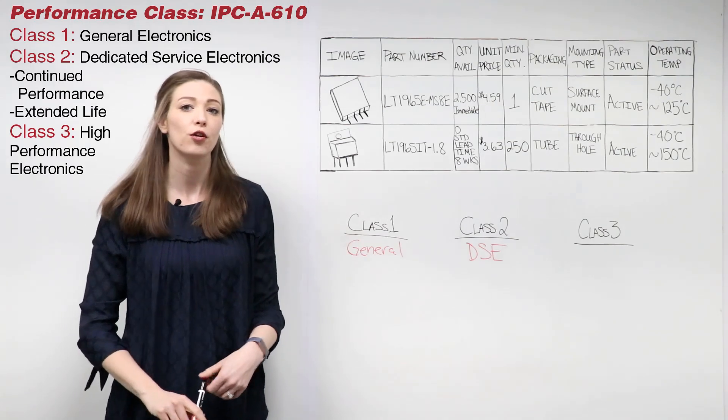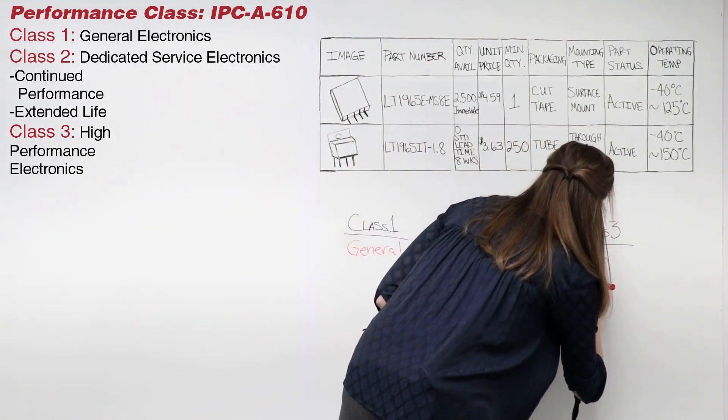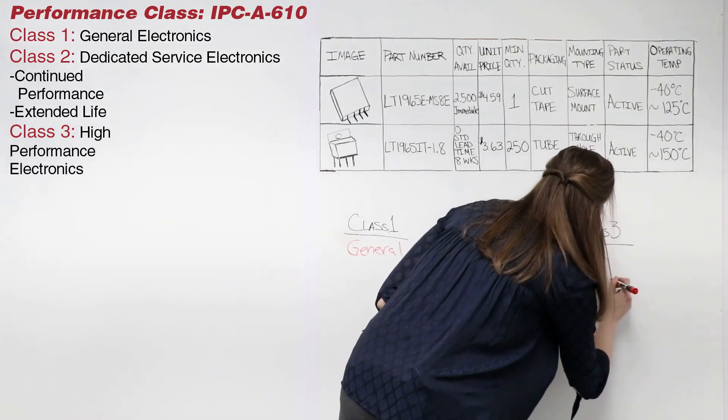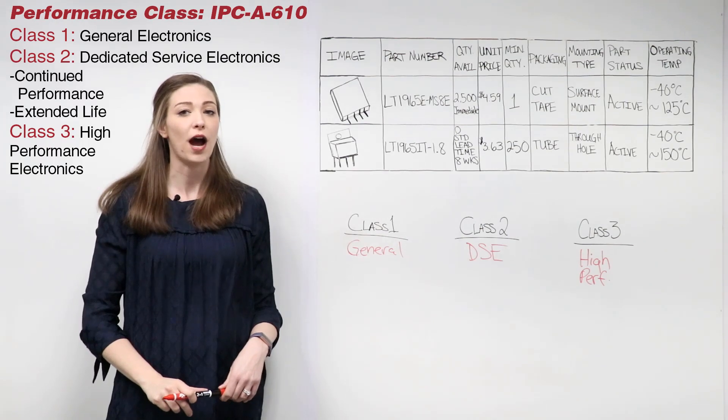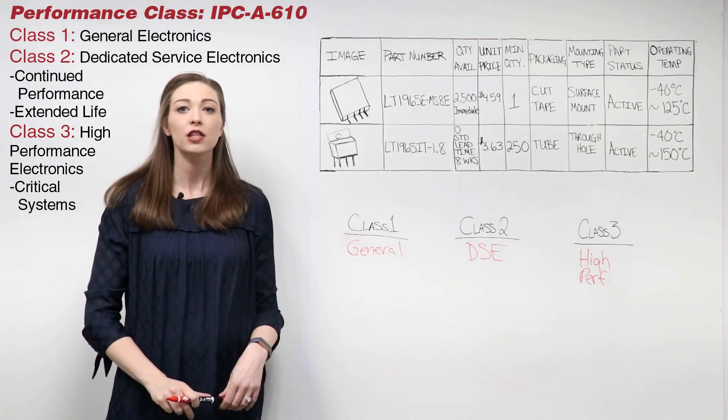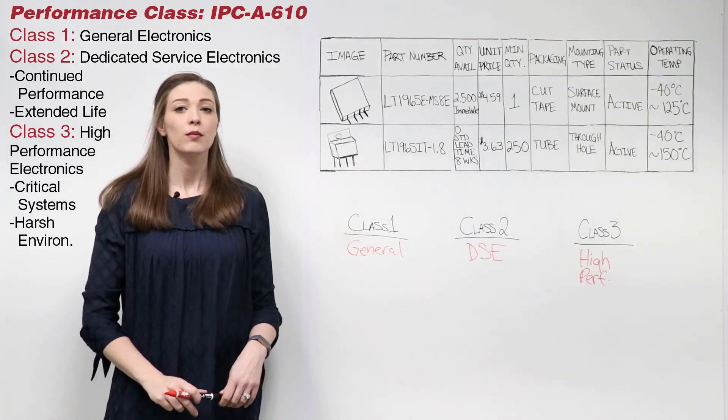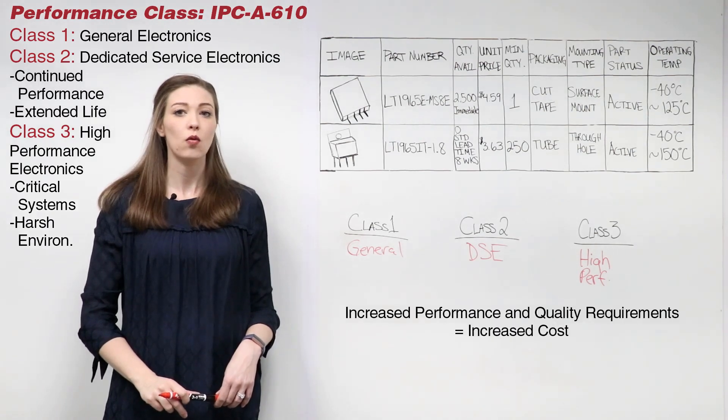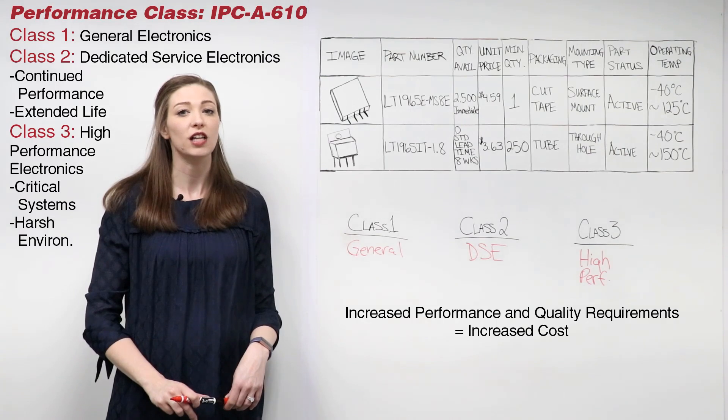Class III is for high-performance electronics. Class III products must function when required, such as life support or other critical systems. These products may be used in uncommonly harsh environments. Please note that due to the required performance and quality levels, the cost of components increases for each class.